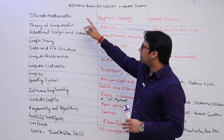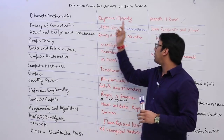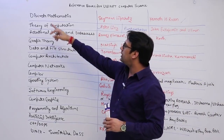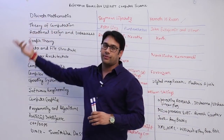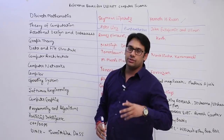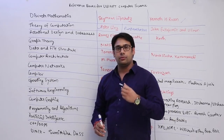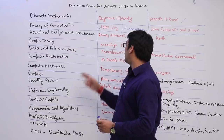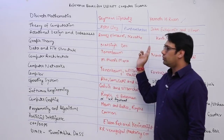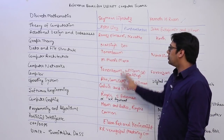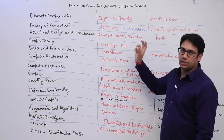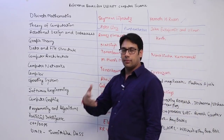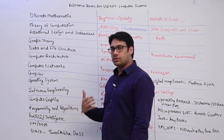For Graph Theory, it is optional to refer a separate book because if you buy Discrete Mathematics by Kenneth H. Rossen, Graph Theory is already included in it. But if you specifically want a book only for Graph Theory, you can refer Narsingh Deo — it is a very good book, a very old book written many years ago, but still up to date.